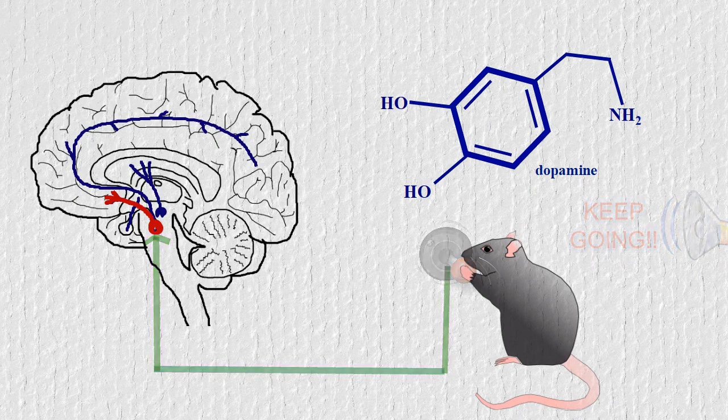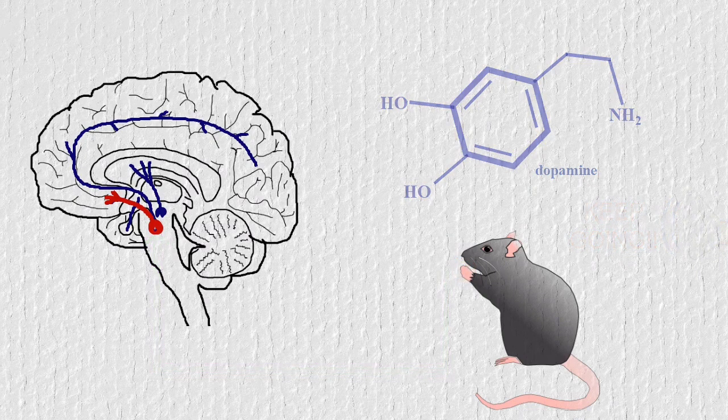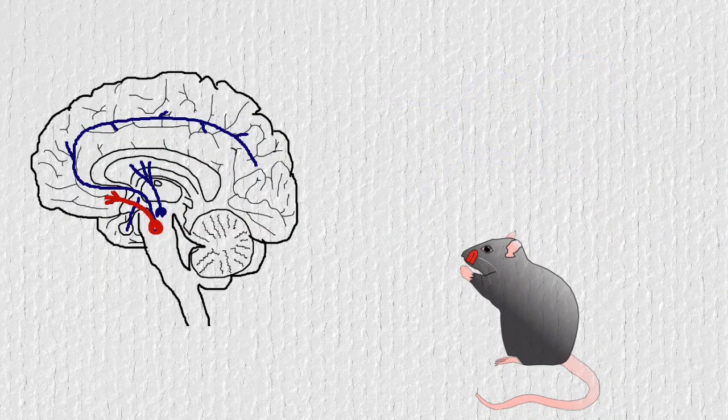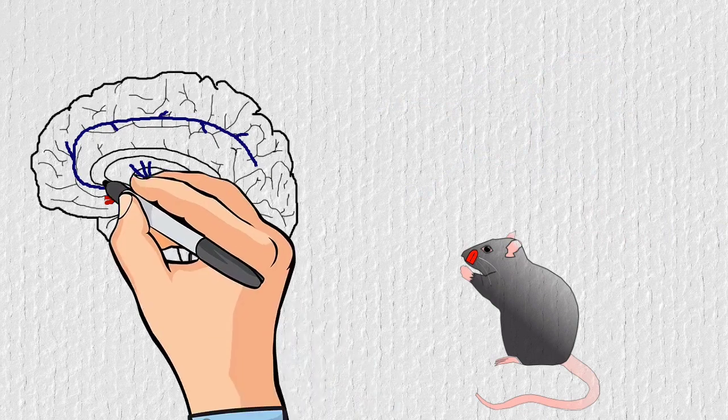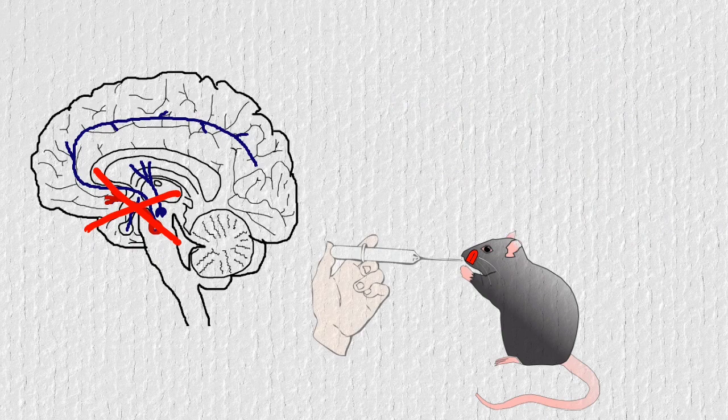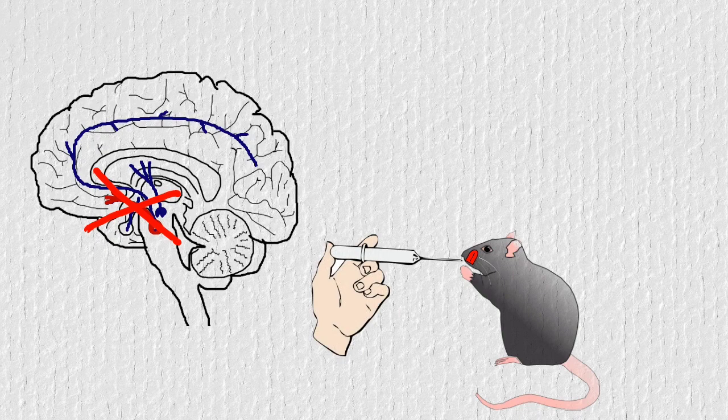Because you cannot ask rats about that, they used a different method. They knew that rats lick their mouth when they really enjoy some food. So to find out whether dopamine is necessary for this enjoyment, they destroyed the dopamine pathways of some rats and gave them sugar. Their reaction was unchanged.